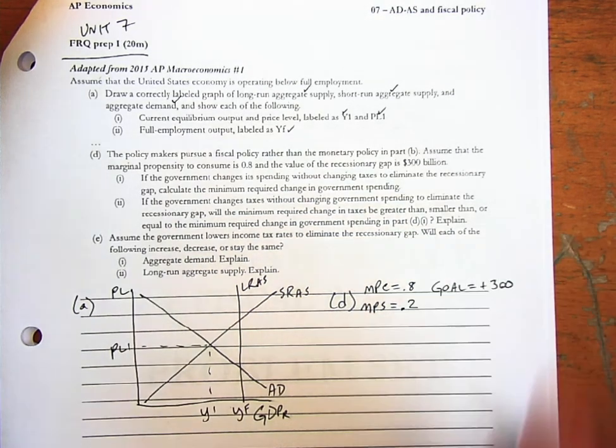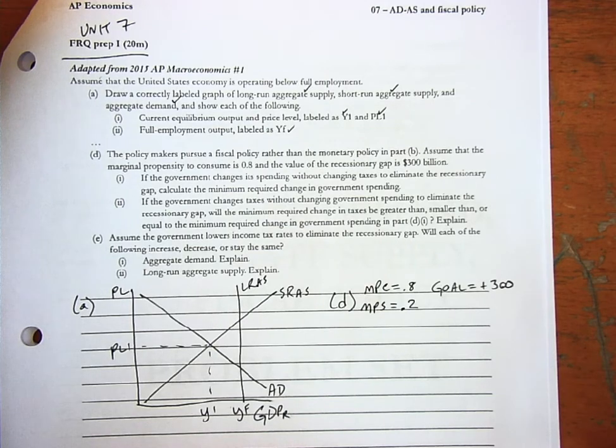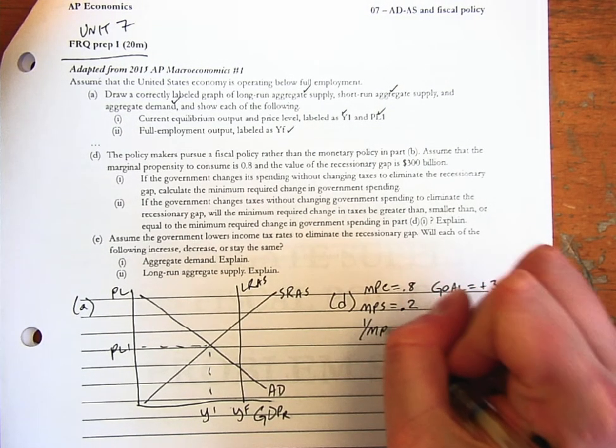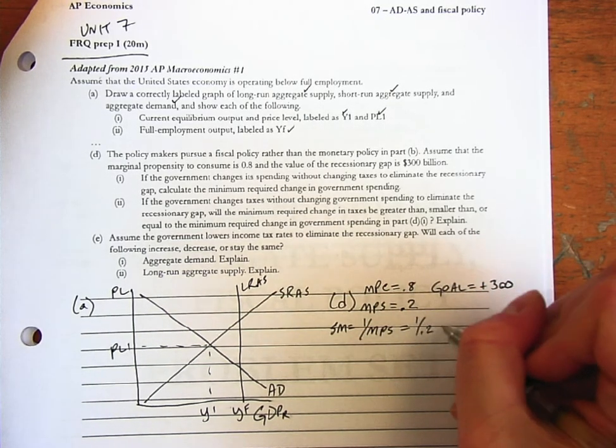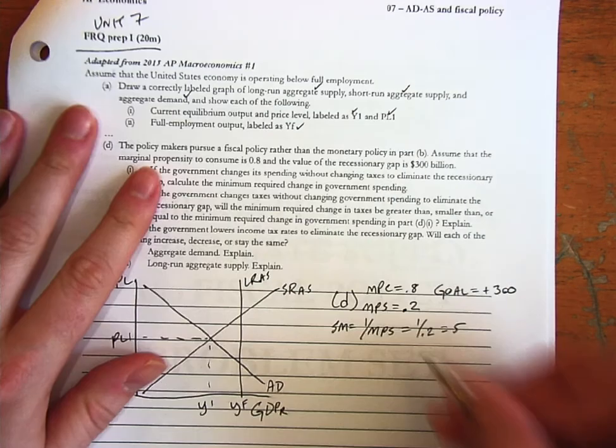We've got to find that. It's going to be 0.2. Again, we're finding where they're equal 1. Then 1 over the MPS is the spending multiplier, and that would be 1 over 0.2, which is 5.